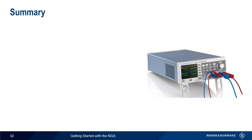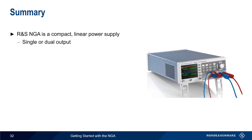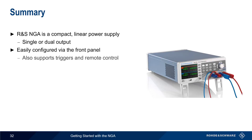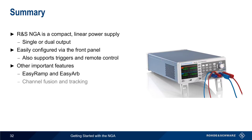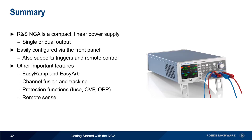Let's end with a brief summary. The Rohde & Schwarz NGA is a family of compact linear power supplies available with either one or two independent outputs. The NGA is easily configured using the front panel, but also supports multiple digital input/output triggers and more advanced remote control. Other important features covered include EZRAMP and EZARB for varying the output, channel fusion and tracking for two-channel models, a variety of protection functions such as electronic fuses and overvoltage protection, remote sense for overcoming the effects of lead resistance, and data logging. This concludes our presentation on Getting Started with Rohde & Schwarz NGA Power Supplies.